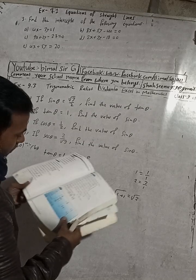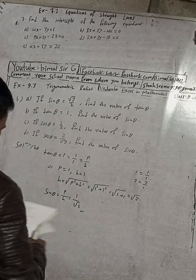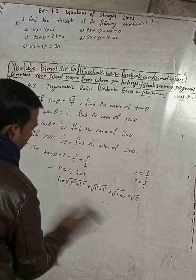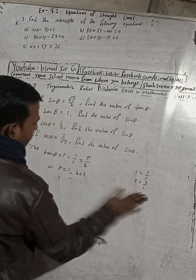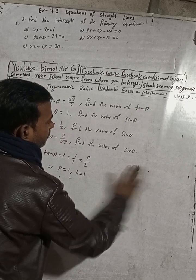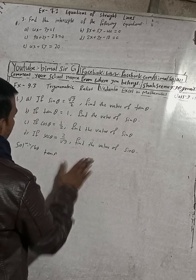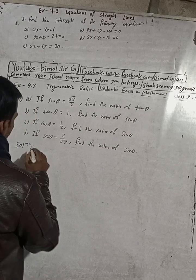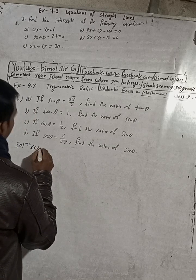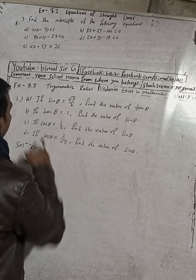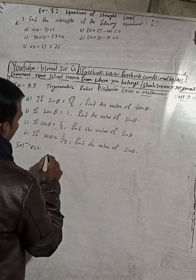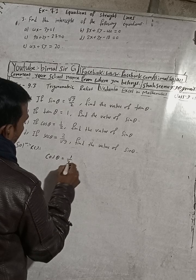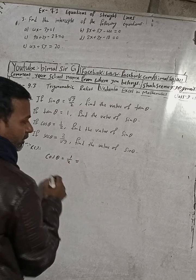The answer in the book is 1 by √2 — correct. So sin θ equals 1 by √2. Now for part C, the question is: if cos θ is equal to 1 by 2, find the value of sin θ.